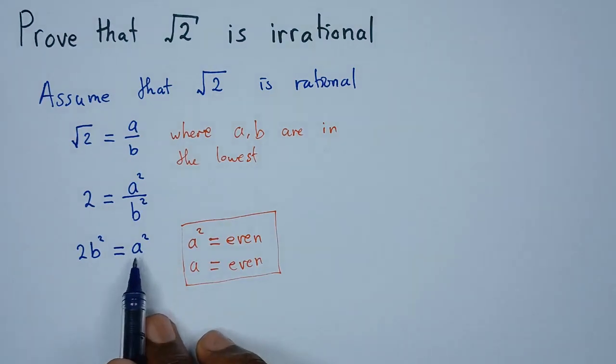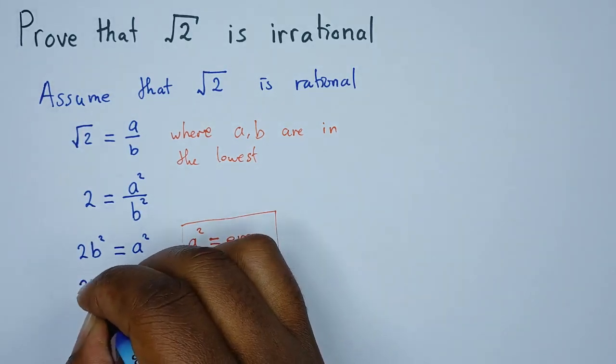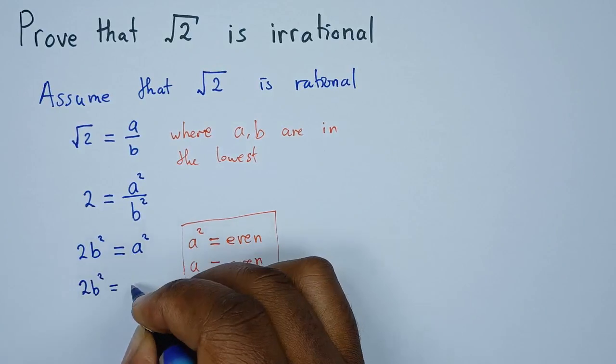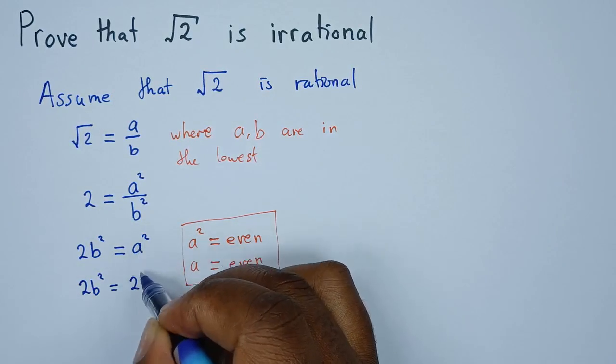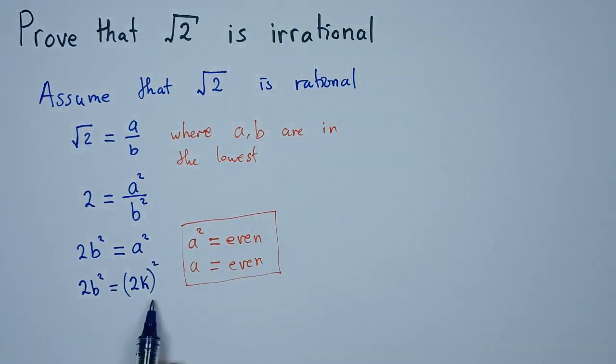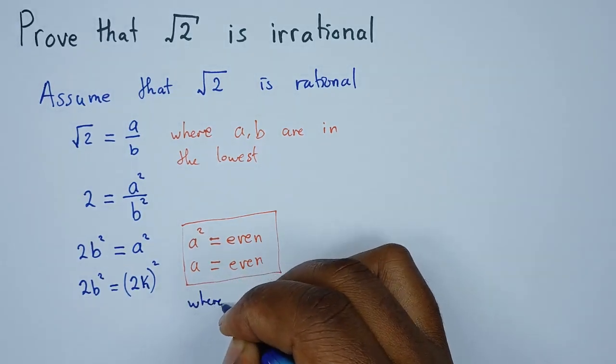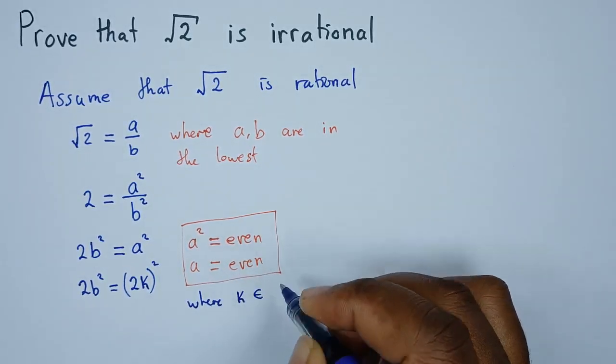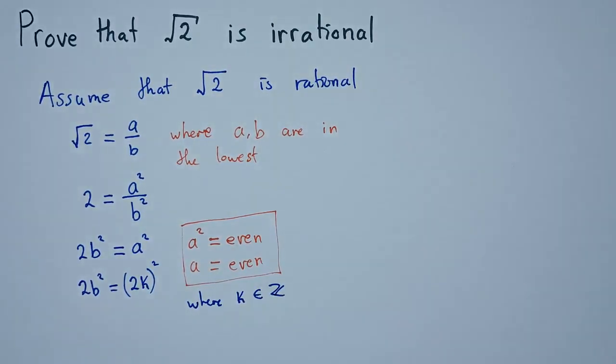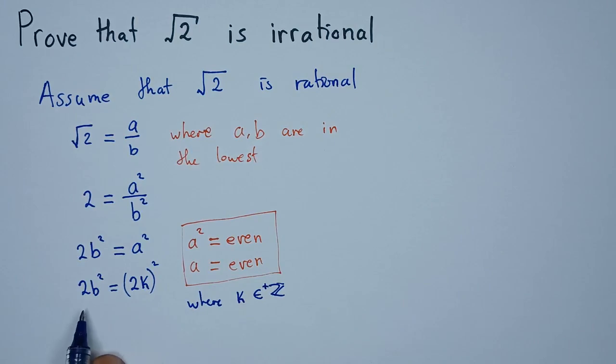Here where there's a, we can assume anything as long as it's an even number. So let's bring in a letter k. We can say 2b squared equals maybe 2k. We're replacing a with an even number 2k, where k is also a member of even numbers or just an integer. So we can say where k is a member of integers. Let's restrict it to positive integers in this case.